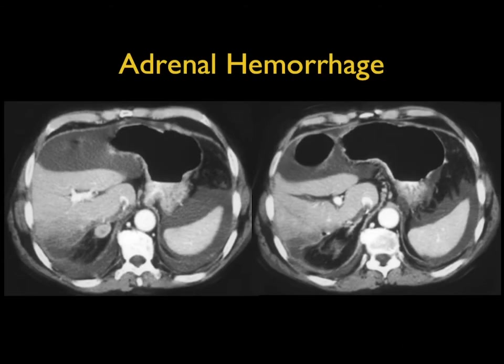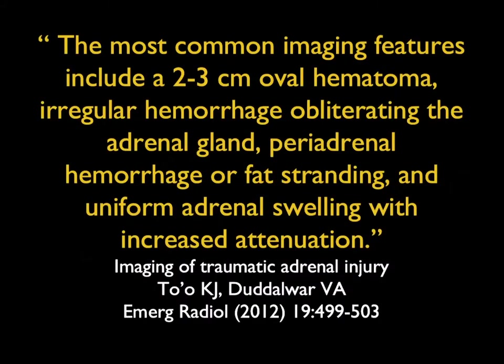Classic imaging appearance: a trauma case with blood in the abdomen. The adrenal is round, oval, enlarged, and high density — classic for adrenal hemorrhage. The most common imaging features include a 3 cm oval hematoma, irregular hemorrhage obliterating the gland, peri-adrenal hemorrhage, and uniform adrenal swelling with increased attenuation. To me, high density and oval appearance, often with stranding, is the most crucial finding.